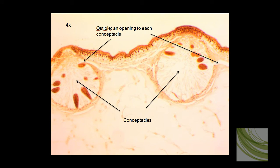Here is another slide that is a little bit better than the first slide. This is showing two female concepticles, and these openings, called osteoles, are very apparent, even using the 4X objective.